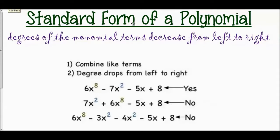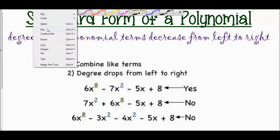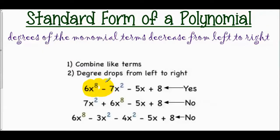Standard form of a polynomial is when the degrees of the monomial terms decrease from left to right — the largest degree on the left, working your way down. To write a polynomial in standard form: first combine like terms, then make sure the degrees decrease from left to right. The correct standard form is six x to the eighth minus seven x squared minus five x plus eight, where degrees go from eighth to second to first to zero and all like terms are combined.